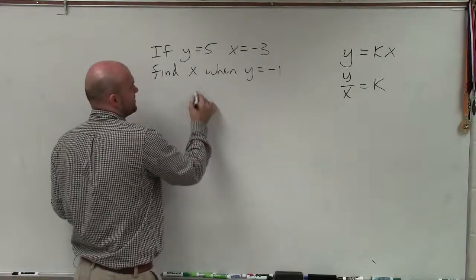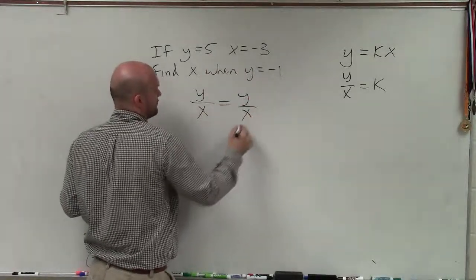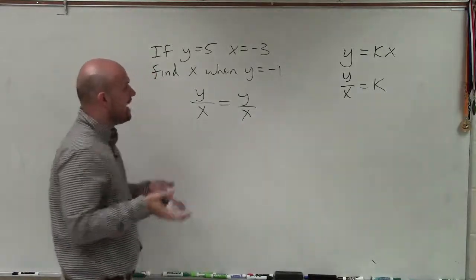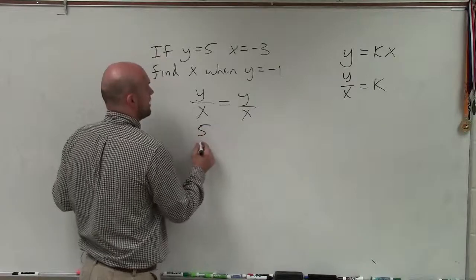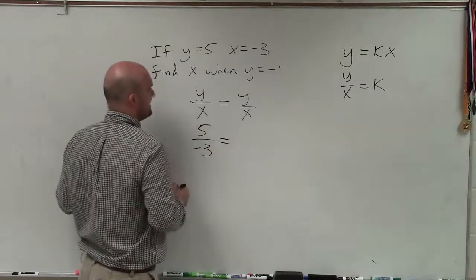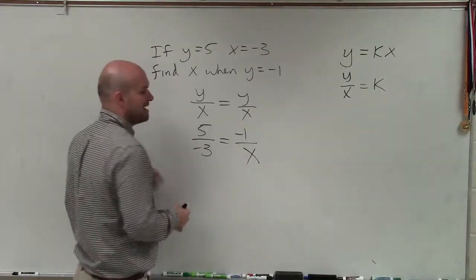Therefore, we can set them equal to each other: y over x equals y over x. So now, what we simply do is plug in our values for y and x for one direct variation, and then set that equal to negative 1, and we want to solve for x.